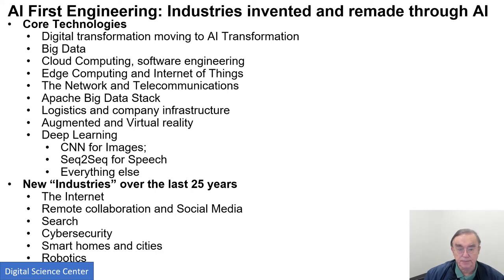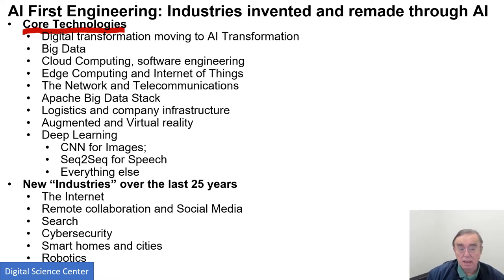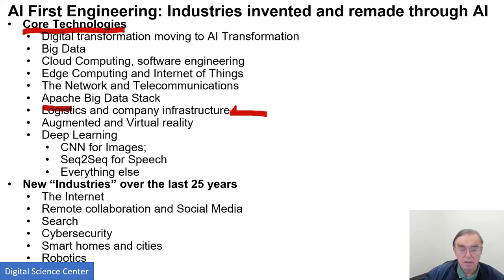The first area is core technologies. We have big data, cloud computing, and software engineering. We're now building lots of devices that capture data — for example, Amazon Alexa is an edge computing device that currently uses the cloud to interpret your voice, but will soon do most of that itself. The network has to be transformed to support AI. There is the Apache Big Data Stack, a huge reservoir of open-source software. And we see Amazon using robots to run its one-day delivery warehouses — AI is doing the logistics, deciding where to put merchandise to maximize the chance of on-time delivery.